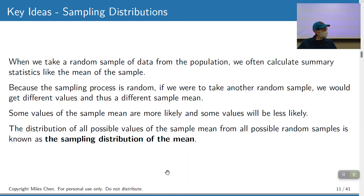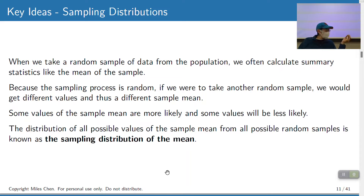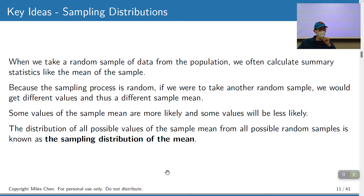What we do is take a random sample of data from the population and calculate the mean or proportion. Because the sampling process is random, if someone else were to follow the same process and get another random sample, they'd get different people and a different sample mean. But we'd expect their sample mean to be close to your sample mean. Some values of the sample mean are more likely and some less likely — the distribution of all possible sample mean values from all possible random samples is the sampling distribution of the mean.